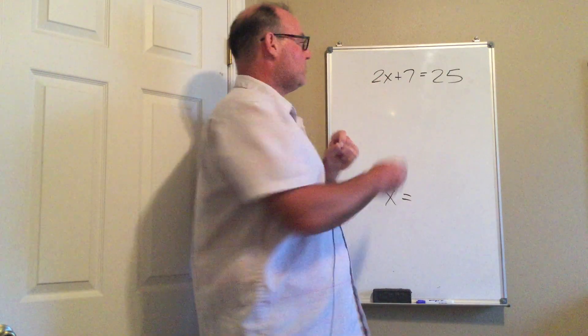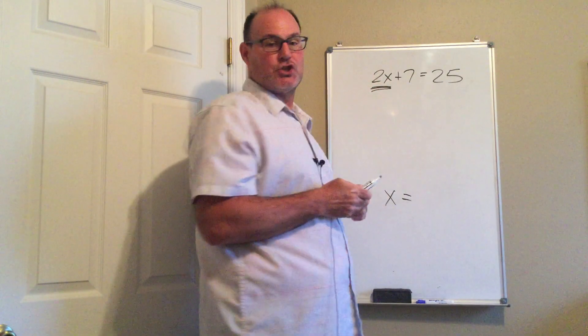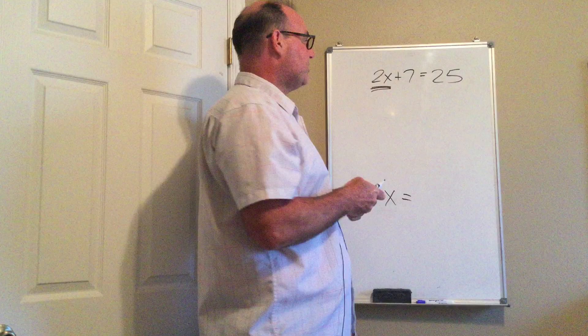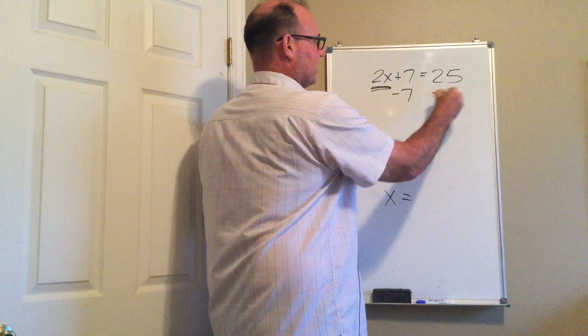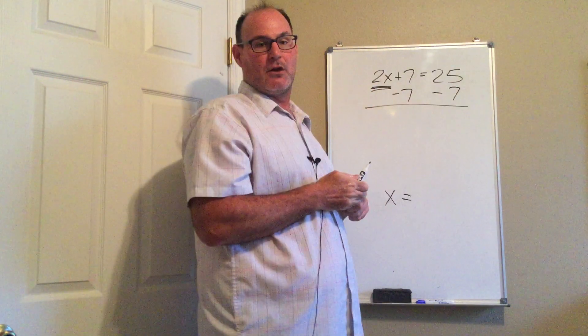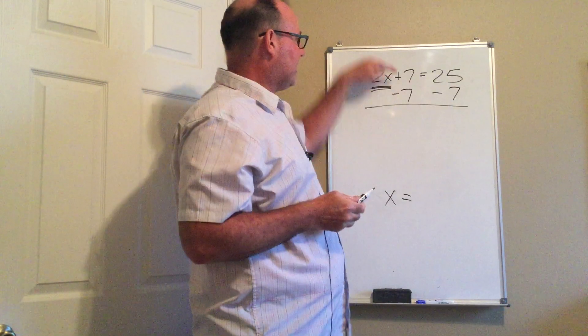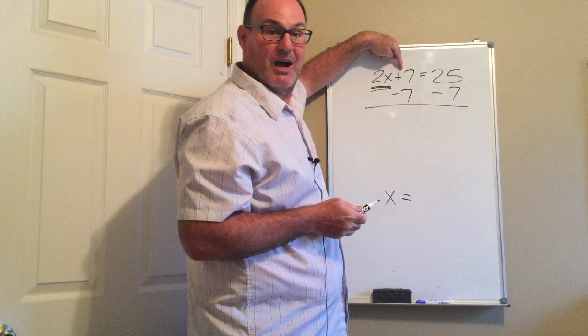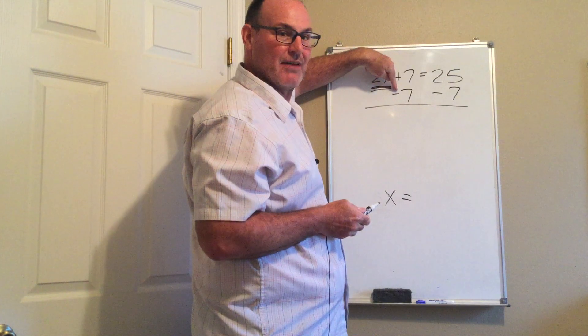First thing we have to do is we have to get the x term by itself. And I will do that by subtracting 7 from both sides. Reason I chose to subtract 7 is you always do the reverse process. We're adding 7 here, so we subtract 7.